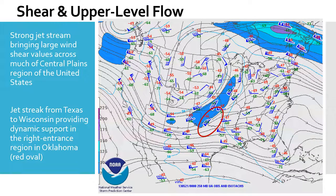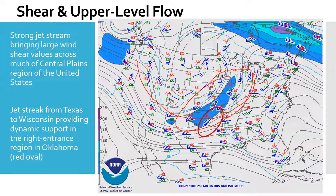We're going to start this forecast example by looking at broad spatial and time scales to get ourselves oriented — remember our forecast cone. This broad synoptic scale first look shows that we've got a strong jet stream coming across the central United States. That strong jet stream is bringing very large wind shear values across much of the central plains, where this blue shading is. This blue shading represents the relatively strong upper level winds, which not only lead to increased overall shear but also act as a jet streak extending from Texas to Wisconsin, playing an important role in increased upper level support for where severe weather may be occurring on this day.